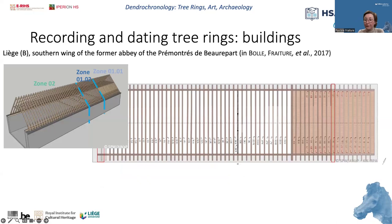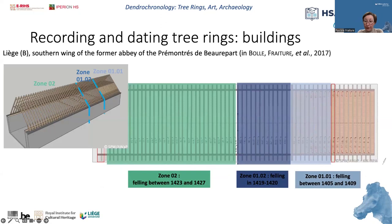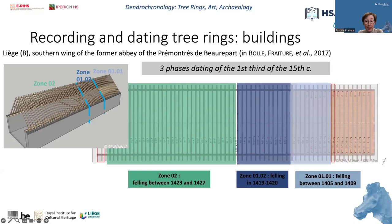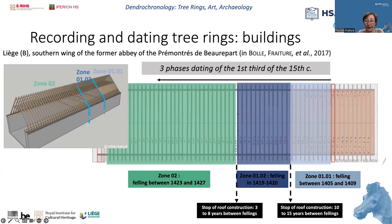Coming back to our roof frame, confronting archaeological and dendro results shows the chronology of the roof construction in three different phases. All are dated in the first third of the 15th century, but with a gap between zones 1-1 and 1-2 of 10 to 15 years between fellings, and a gap of 3 to 8 years between zones 1-1 and 2, with construction proceeding from east to west.